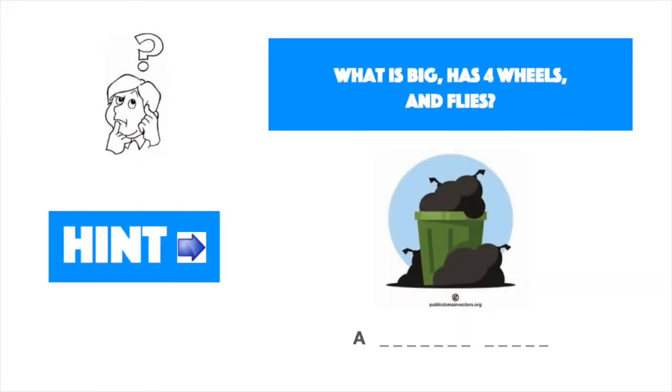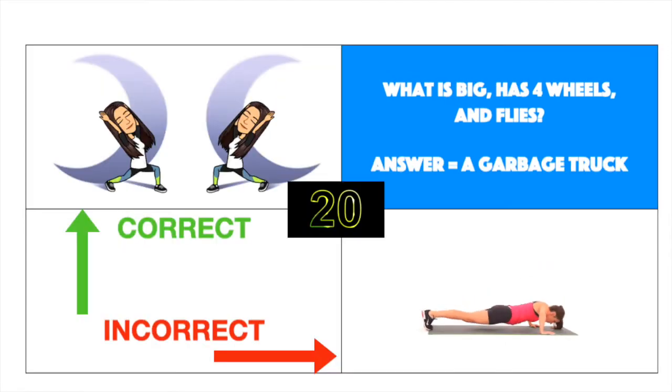What is big, has four wheels and flies? Answer, a garbage truck. Correct, do crescent pose on both sides. Incorrect, do push-ups.